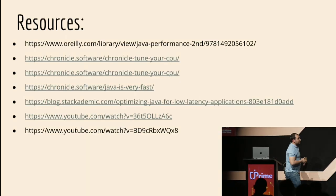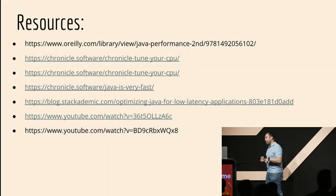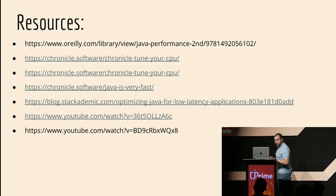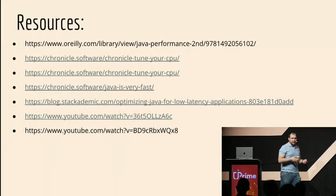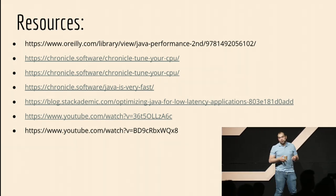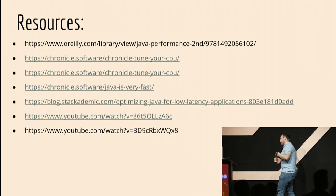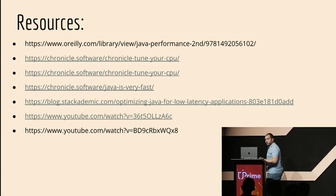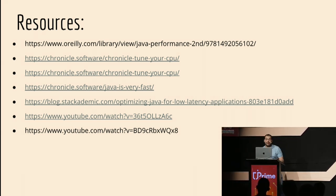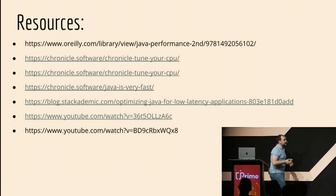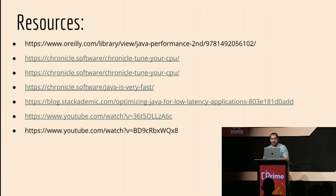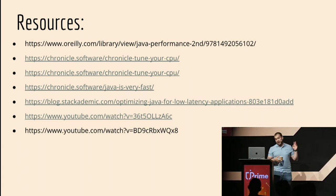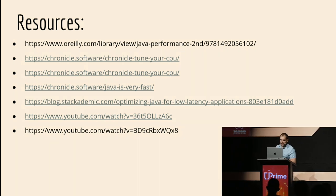Some resources — this talk was prepared from all of those links. There is an amazing book for Java performance, second edition. There are a couple of articles on the Chronicle website where you can learn why you need to pin your thread to the CPU. Also there is an article about why Java is very fast, covering why you don't need to create too many objects. There are some optimizations and two really good YouTube reactions.